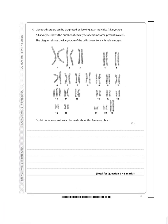Genetic disorders can be diagnosed by looking at an individual's karyotype. A karyotype shows the number of each type of chromosome present in a cell. The diagram shows the karyotype of cells taken from a female embryo. Explain what conclusion can be made about this female embryo.